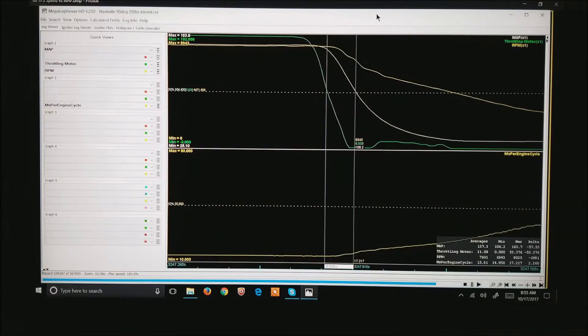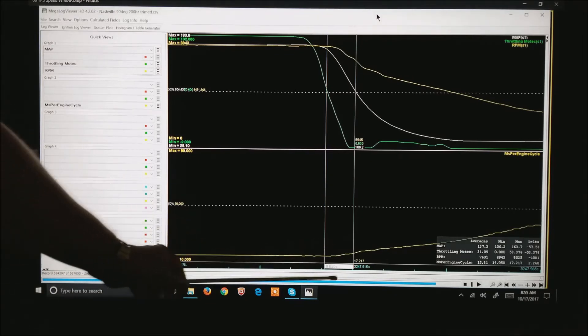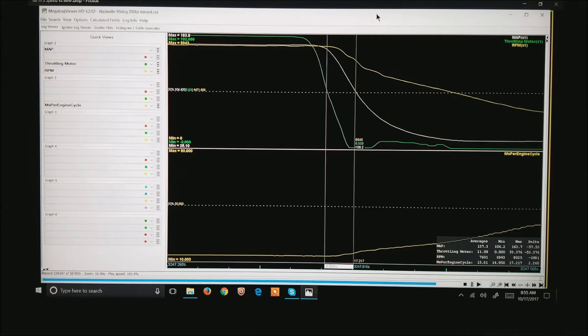So now this happens to be a supercharged motor spinning along at in this case about 7000 RPM. Again, we have a sudden lift in the throttle position and notice that the manifold air pressure is delayed. It happens to be, if you can see it down at the bottom, about 55 thousandths of a second delayed. Or again, about three engine cycles. The delay is relatively short.